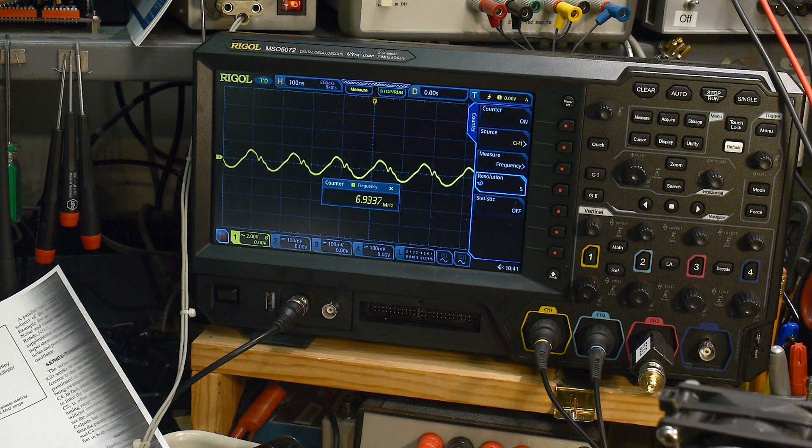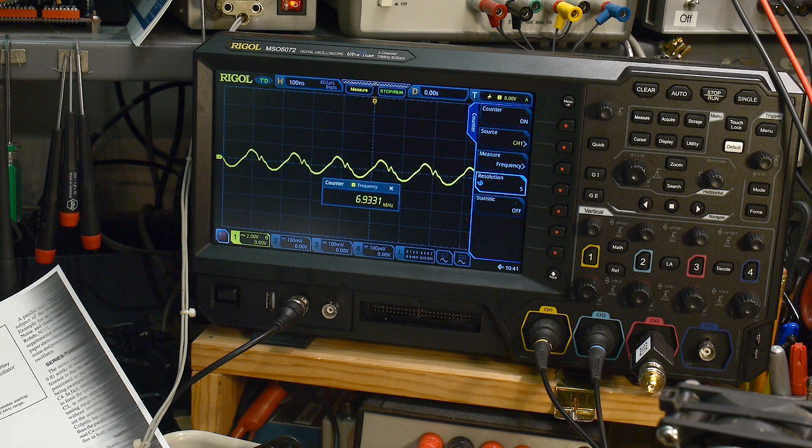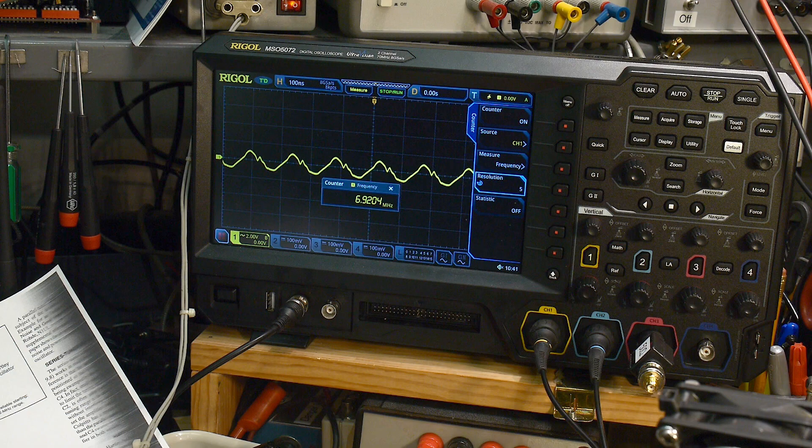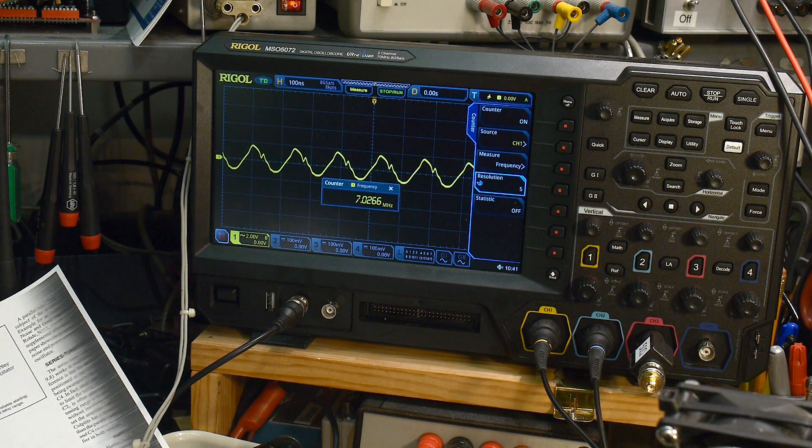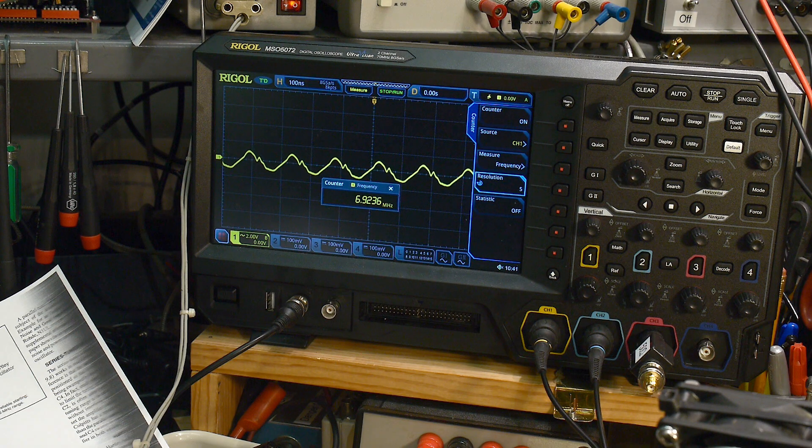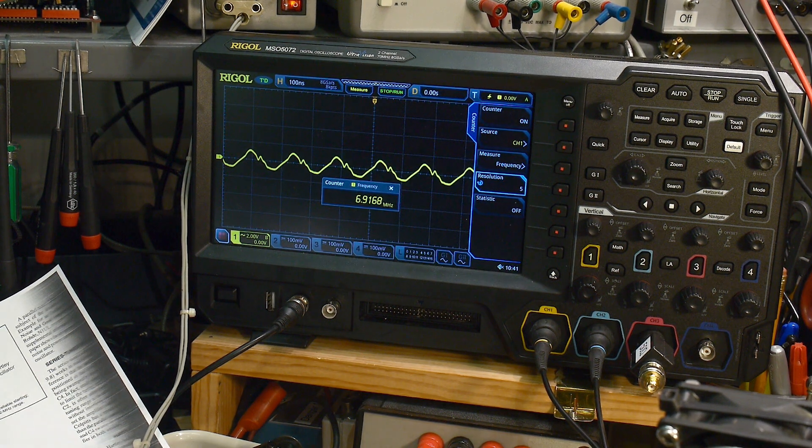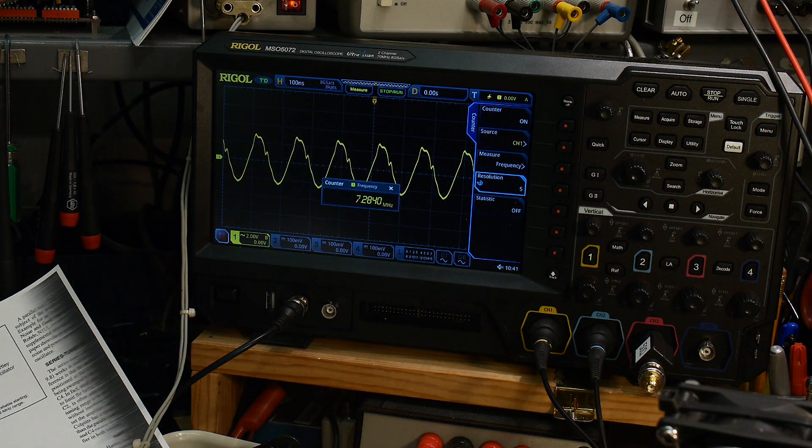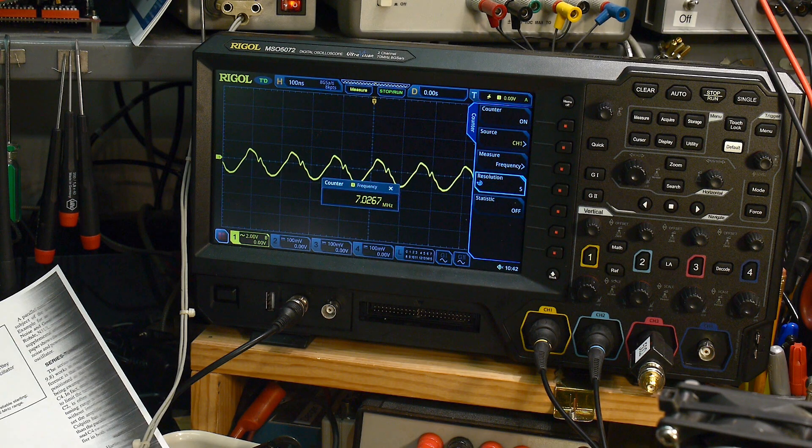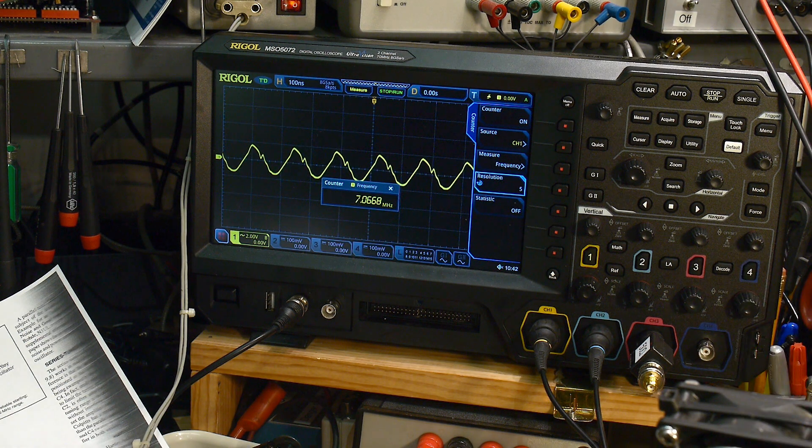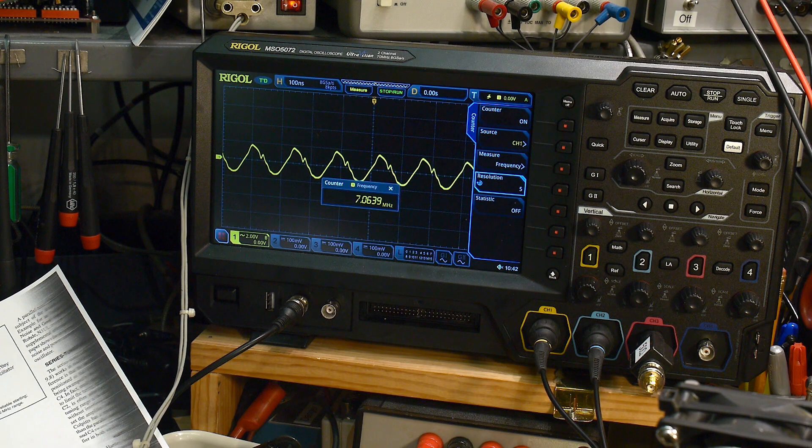Like I said, I need a finer, maybe a 10-turn pot with a maximum voltage of two volts or something like that. Anyway, you can see that it's actually functioning as a VCO. So success! I redeem myself. So we do have a working VCO although it is a bit touchy right now.